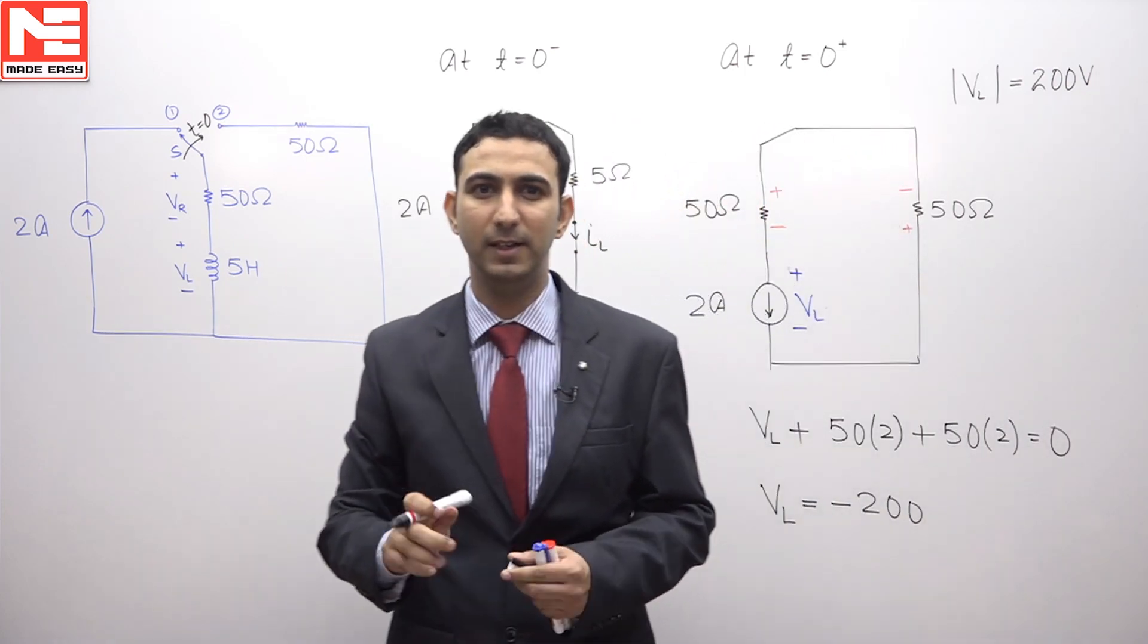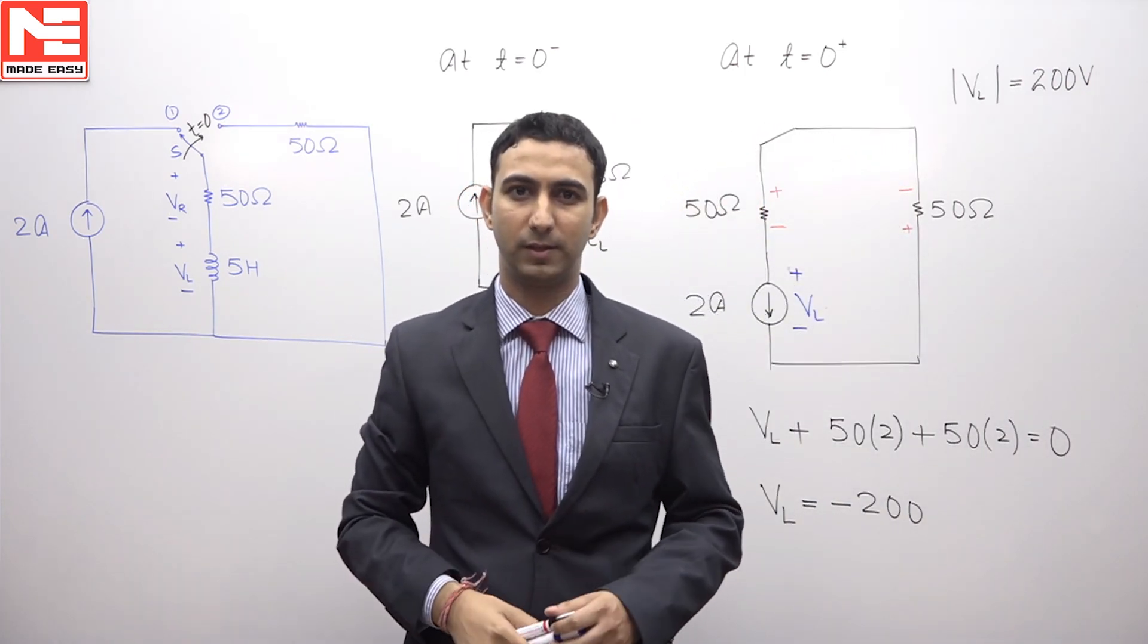Therefore, the magnitude of the voltage across the inductor at t equals 0 positive, it will be 200 volts.